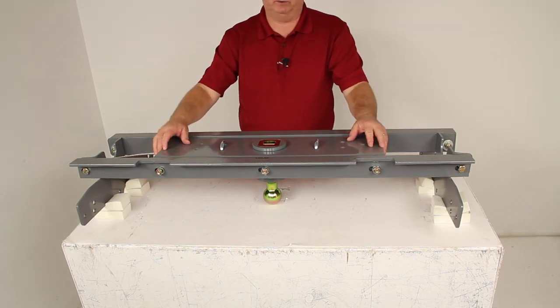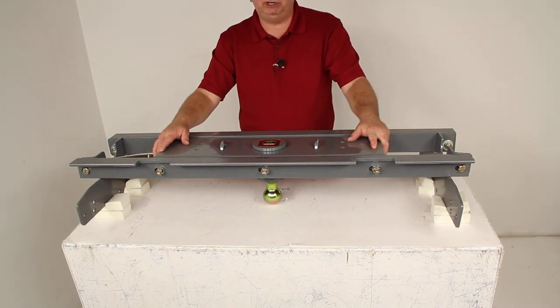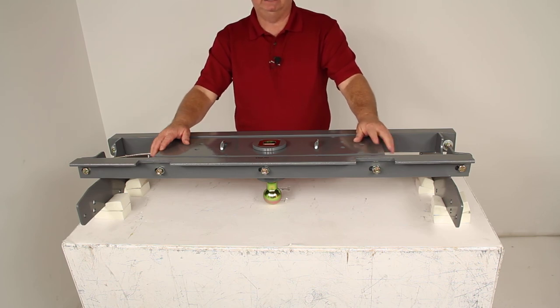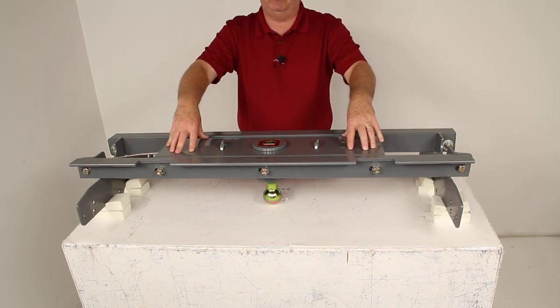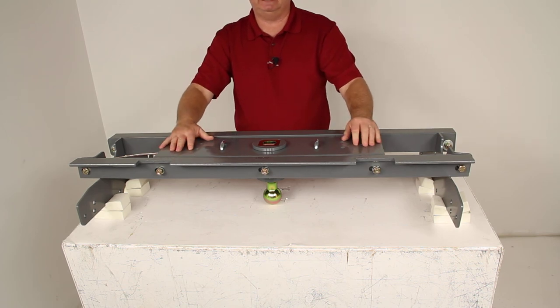That should do it for the review on part number BWGNRK1197, the B&W Turnover Ball Underbed Gooseneck Trailer Hitch with the custom installation kit.